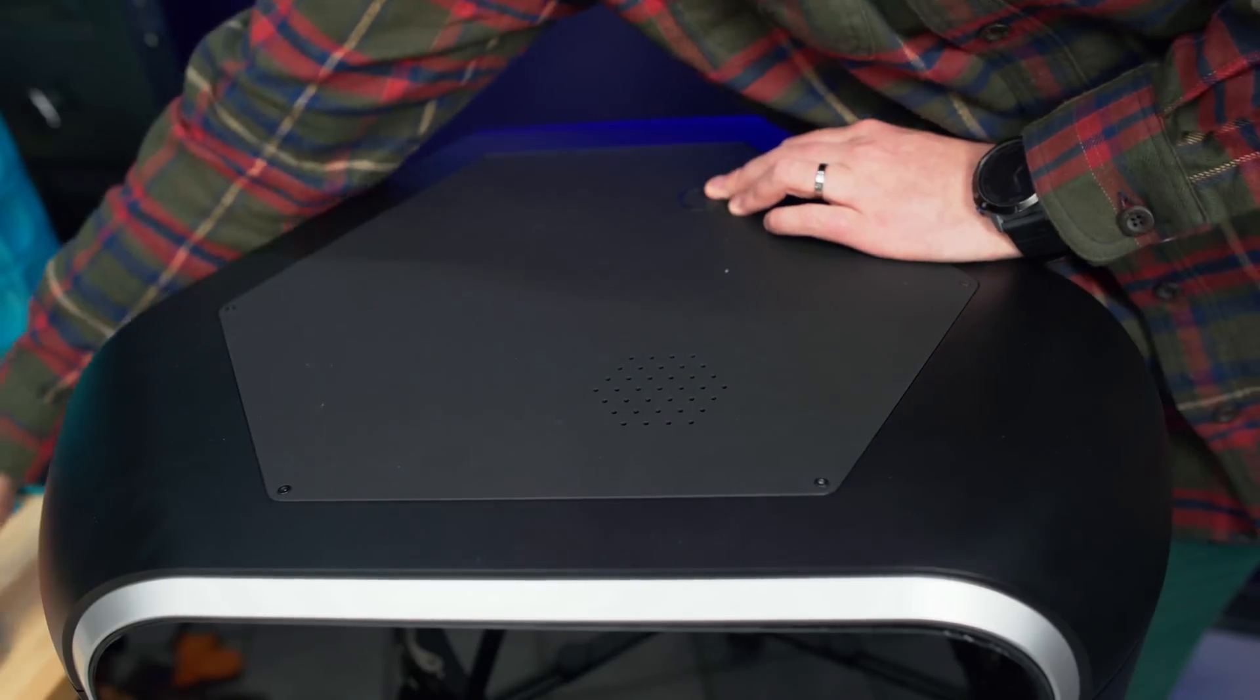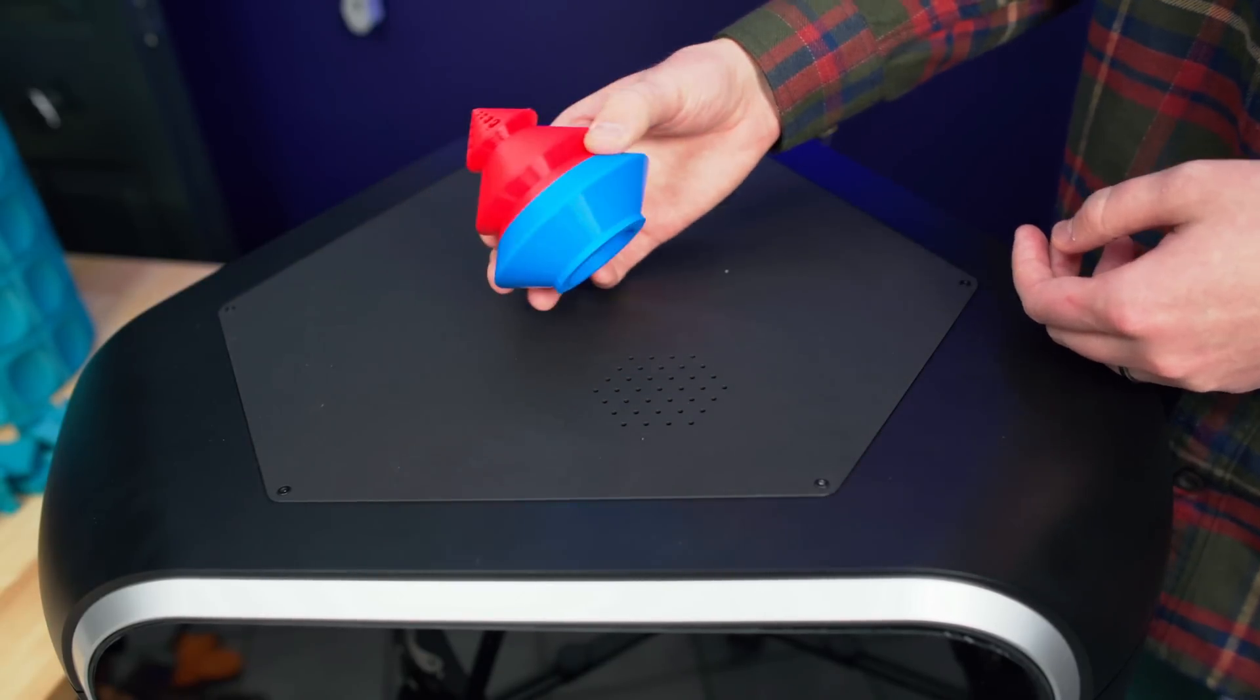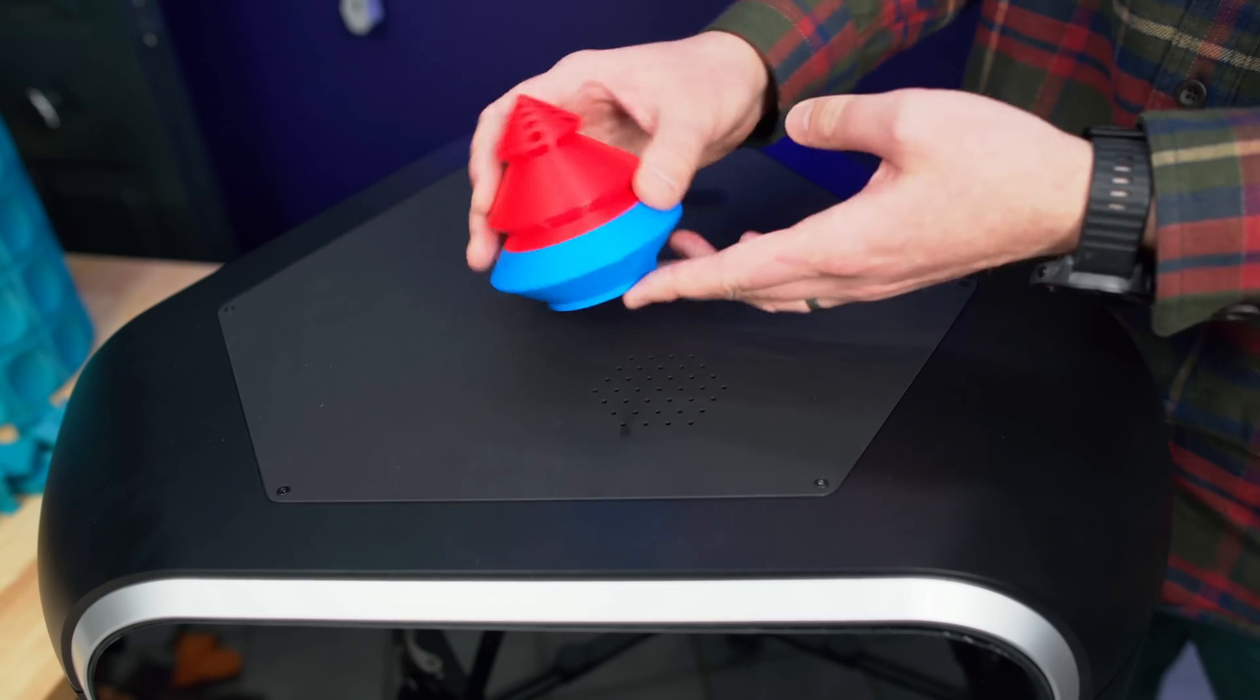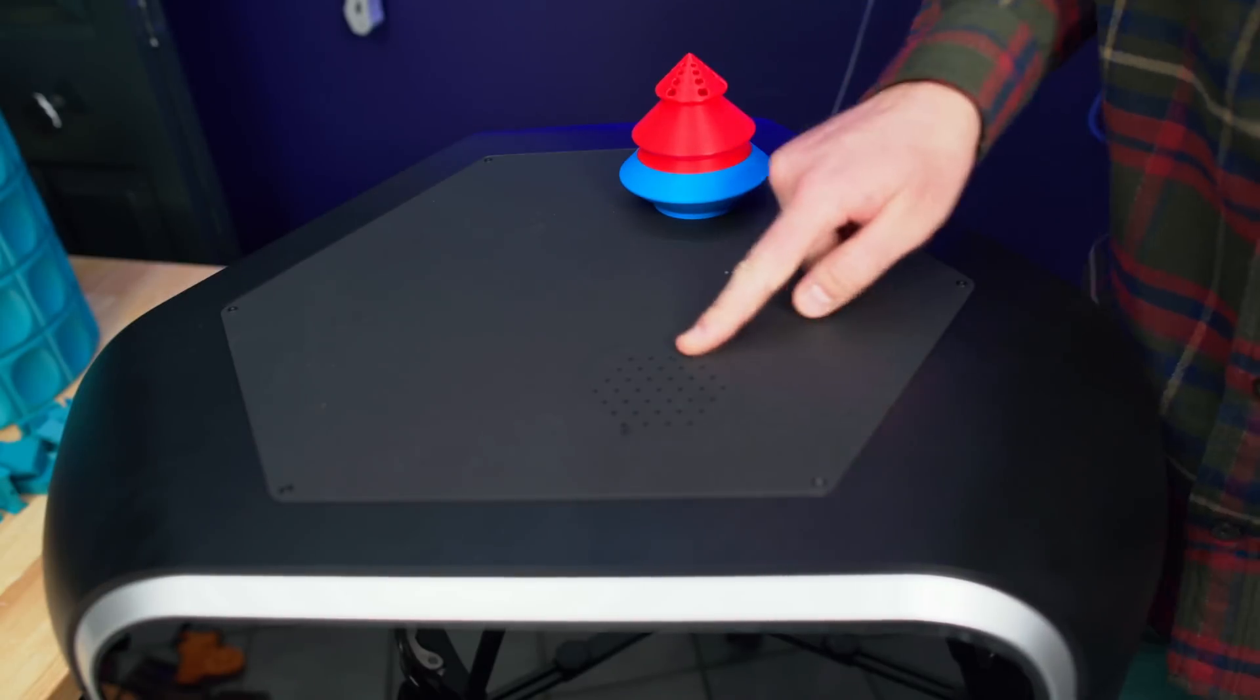Up on the top of the printer are two fan grills and this one on the back is the one that goes to the part cooling fan. I printed out this fan silencer and it really does decrease the noise if you just place it on top here. This other one is just for getting some airflow to cool the electronics.